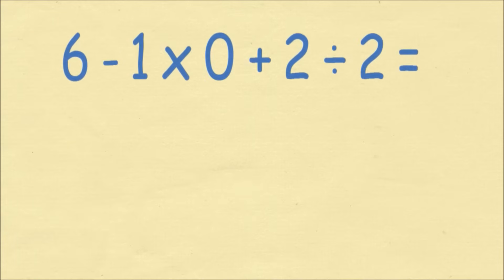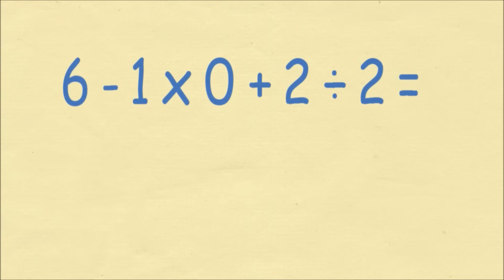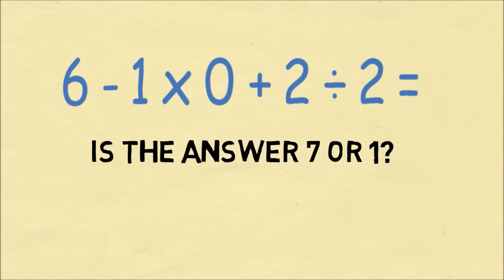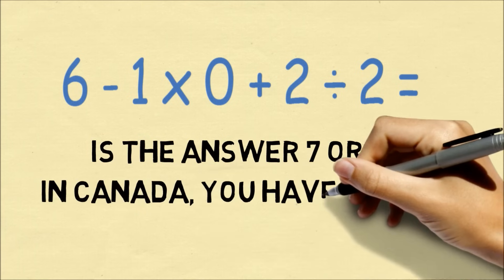The problem is 6 minus 1 times 0 plus 2 divided by 2. Some people say the answer is 7 and other people strongly disagree and say the answer is 1. So what's the answer?